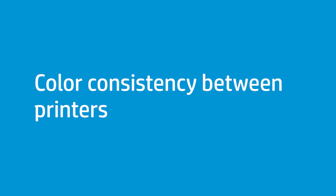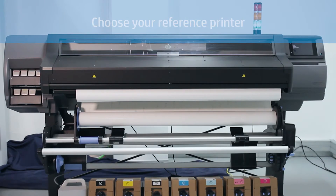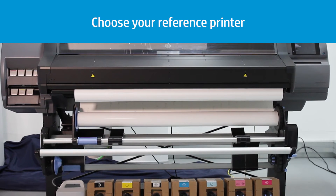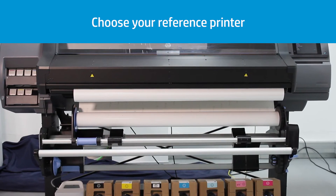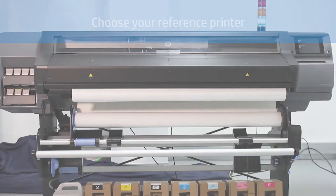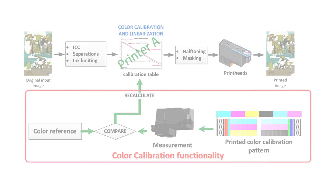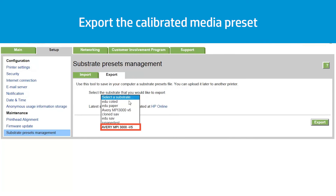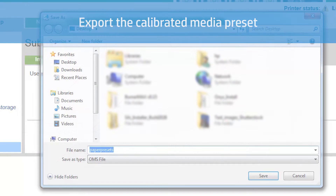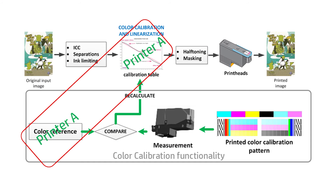Follow these steps to create colour consistency between different printers. Choose a reference printer to perform colour calibration on the substrate preset you want to use. The calibration table has been recalculated to compensate the status of the printheads installed in the printer. From the reference printer's embedded web server, export the calibrated media preset. The reference printer's colour reference and conversion table will be included in the generated .oms package.